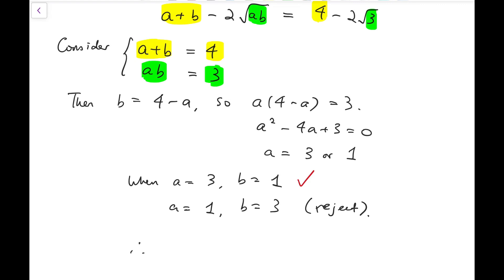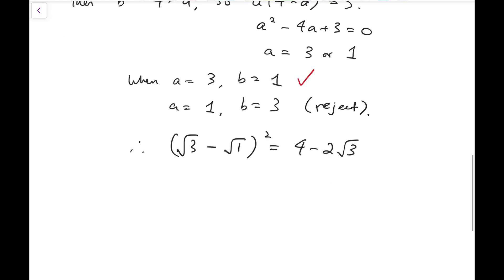And so that means we know that, therefore, root 3 minus root 1 all squared equals 4 minus 2 times root 3. And so at last, we can claim that our square root can be simplified into root 3 minus 1. So this is the final answer for the problem in the thumbnail.